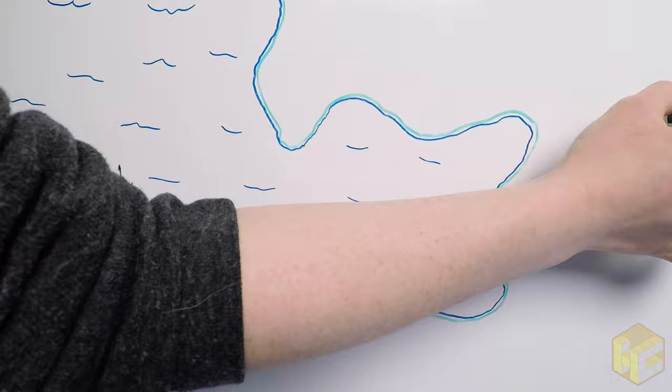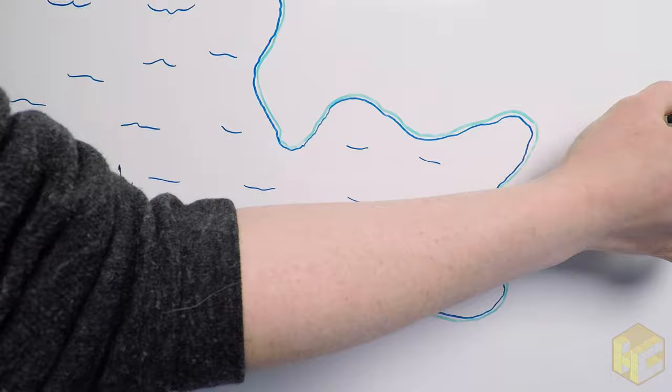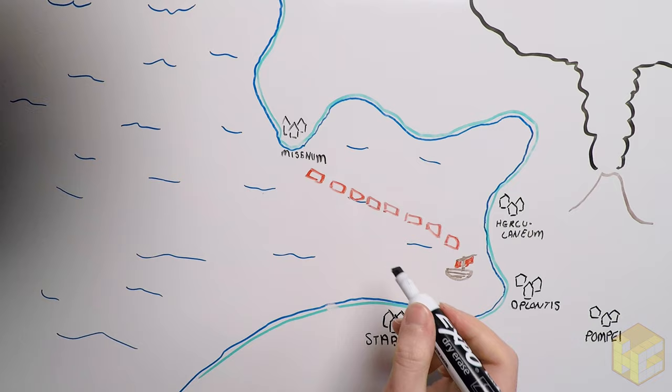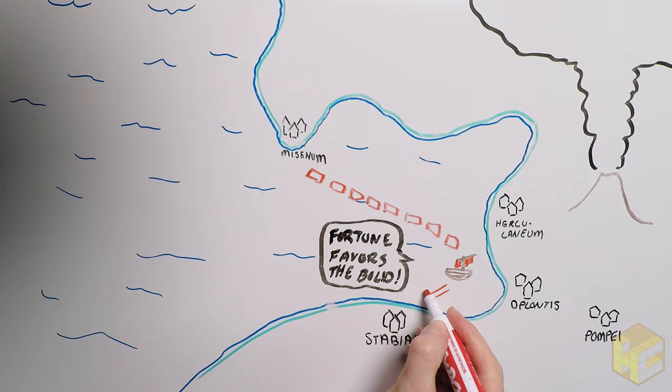As Pliny the Elder reached the intended spot to come ashore, pumice-filled rough waters made putting in too unsafe. While this exact location is unknown, scientists believe this was close to Herculaneum. Pliny the Elder wondered whether to turn back, but then exclaimed, Fortune favors the bold, and they pressed onwards towards Stabiae in the hopes of finding better conditions to land there.